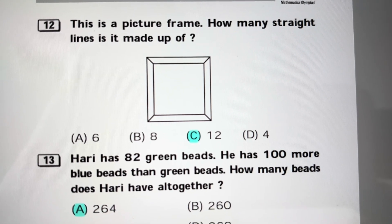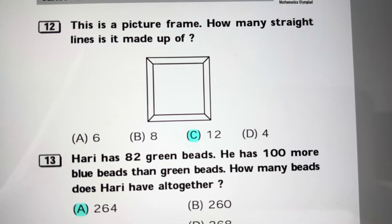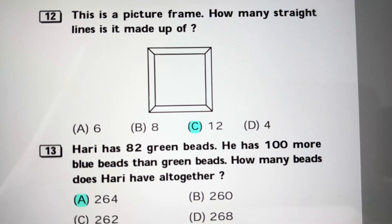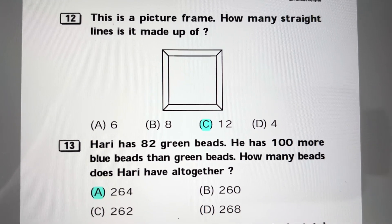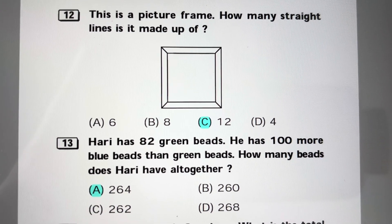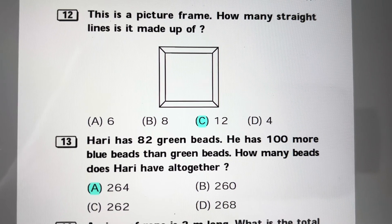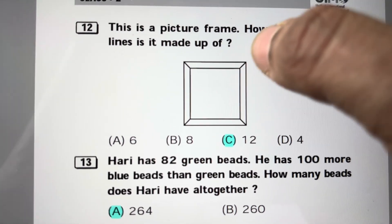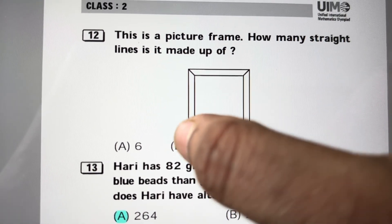In this picture frame, how many straight lines is it made up of? The outer square has four straight lines, the inner square has four straight lines, four plus four is eight, and there are four joining lines, so total there are 12 lines. Answer is C, 12.